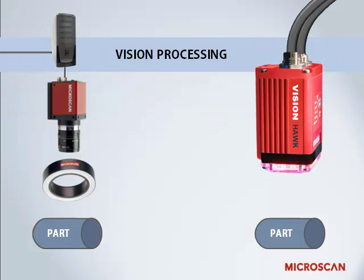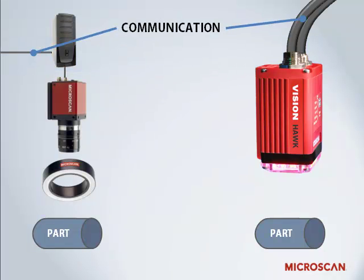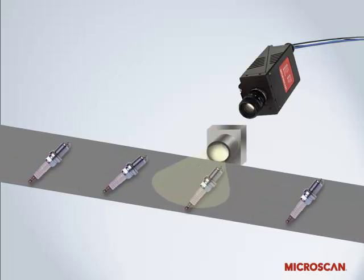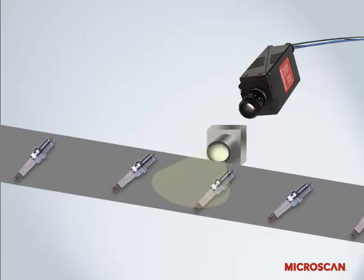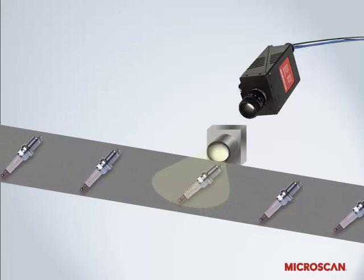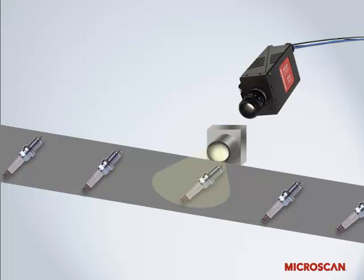Vision processing consists of algorithms that review the image and extract required information. Then the system will run whatever measurements or other processes it has been instructed to run. Finally, the resulting data is communicated out to the world in a useful manner. Before we take a closer look at each component, it is important to note that the part itself is a consideration. Part placement and orientation should be consistent and repeatable to achieve the best possible results.